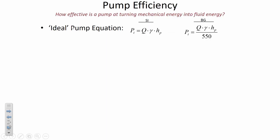Here's the ideal pump equation in both SI and BG units. In SI: flow rate Q in cubic meters per second, times unit weight γ in newtons per cubic meter, times pump head h_p in meters, gives power in watts. In BG units: Q in cubic feet per second, unit weight in pounds per cubic foot, pump head in feet, divided by 550 foot-pounds per horsepower, gives power in horsepower.